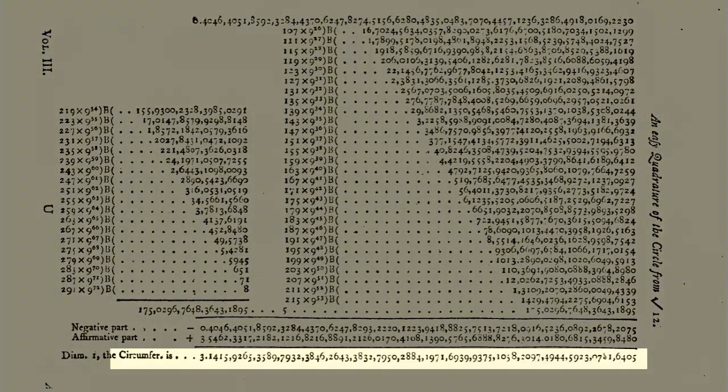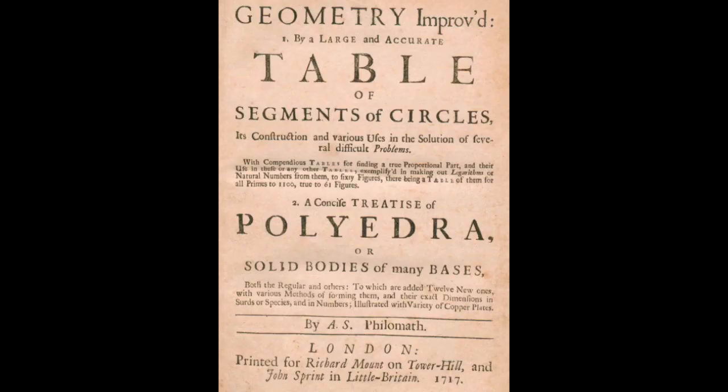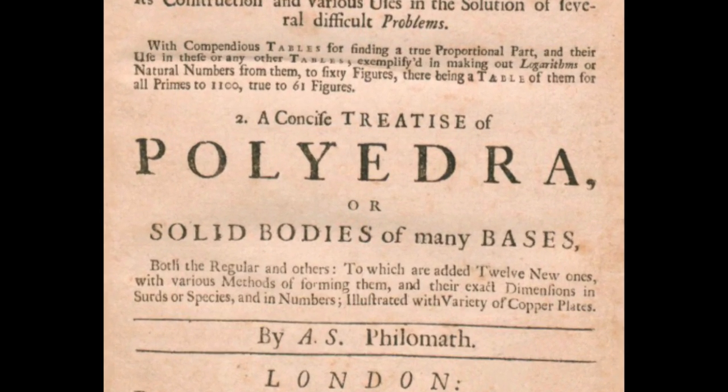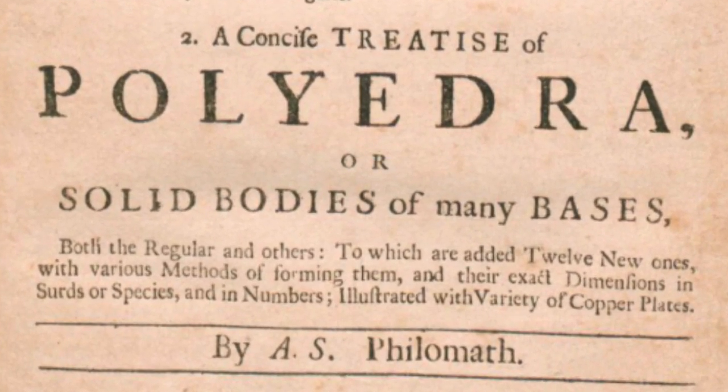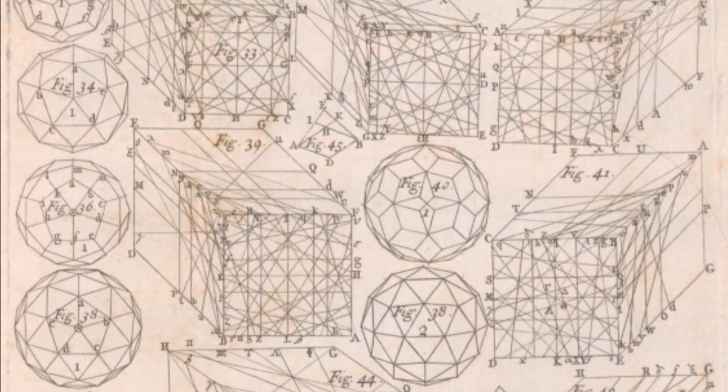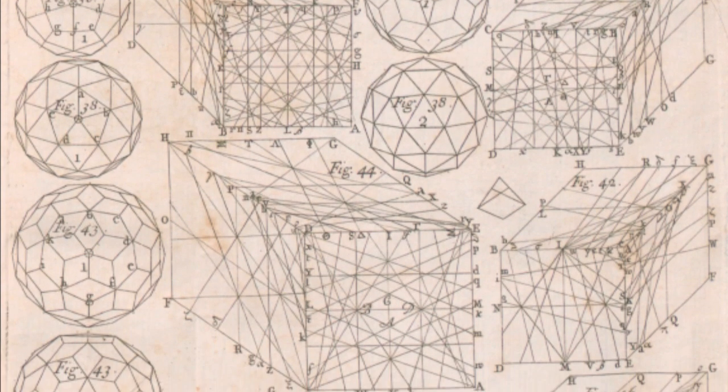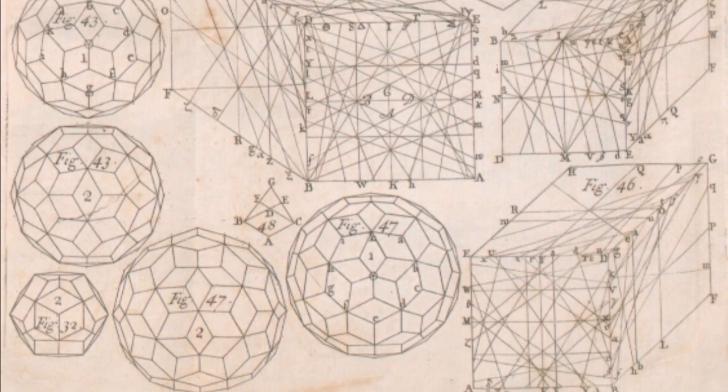Sharpe combined his love of calculating and his love of making things when he wrote a weird little book called Geometry Improved. It was published in 1717. In this book, he shows a dozen new polyhedra that he invented. Some are quite complex for the time, with up to 120 faces. They involve a number of original design ideas, but I don't think anyone studied his book for 300 years.